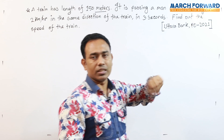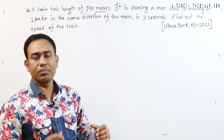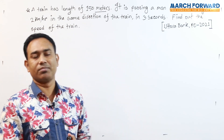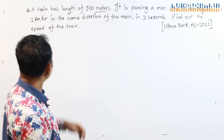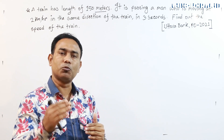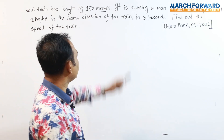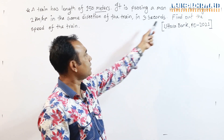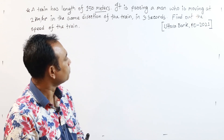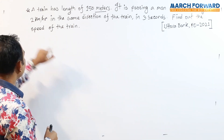Who is moving at 2 km per hour in the same direction of the train — that means 2 km per hour in the same direction of the train, where the train passes in 3 seconds.